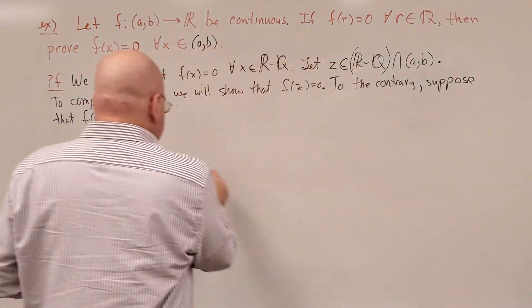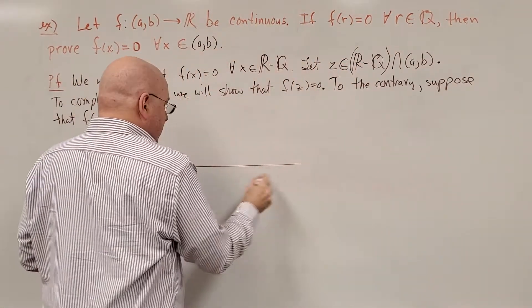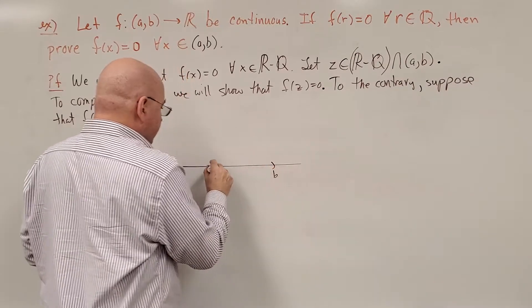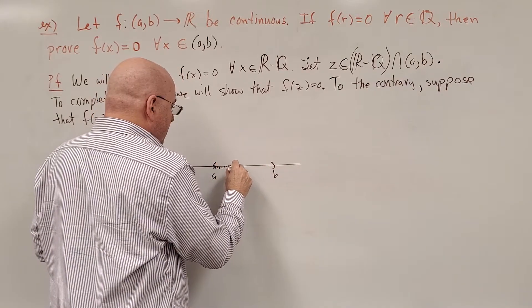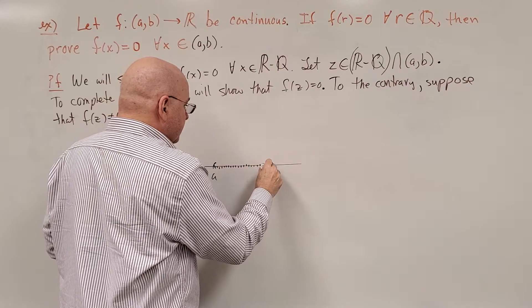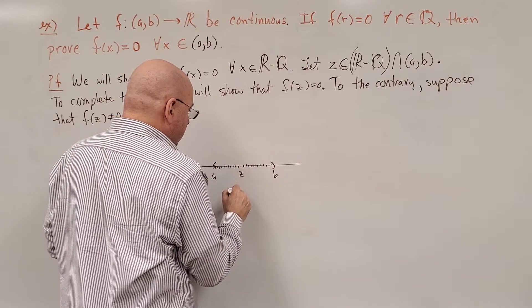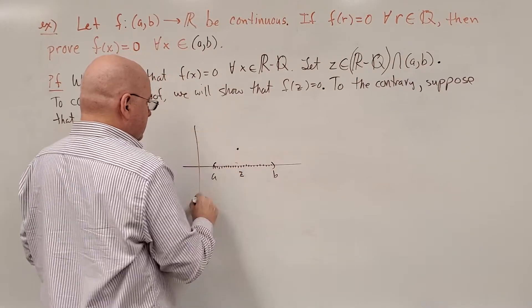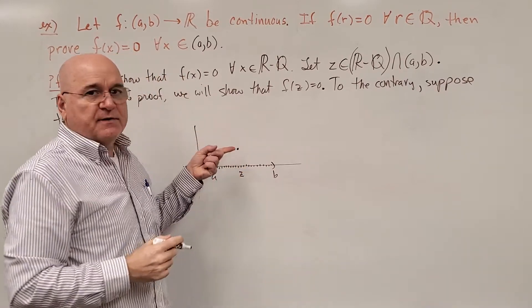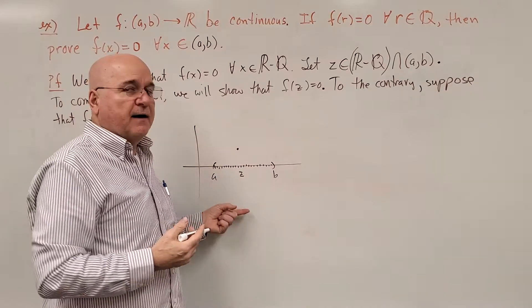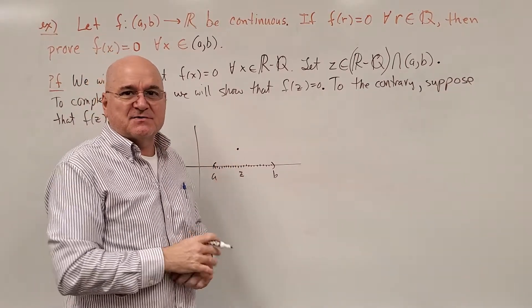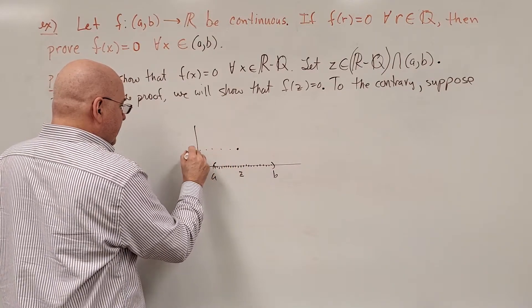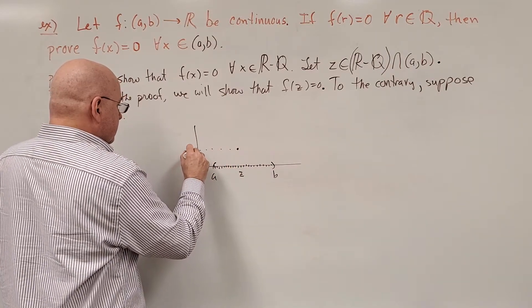So what we have is the function f from a to b. If we're plotting it, it's 0 for all of the rational numbers. We've got some z here in the middle that's an irrational, where f(z) is... I drew it above the x-axis. It could easily be down below the x-axis. I'm just going to choose this one for simplicity. So, that height is f(z).